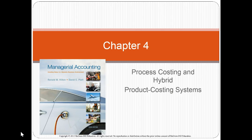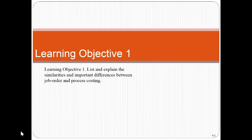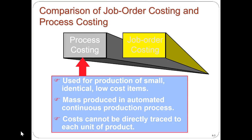Hello, this is Bob Steele. In this video we will take a look at chapter four, which covers process costing and hybrid product costing systems. Learning objective number one will be to list and explain the similarities and important differences between job order and process costing. We did job order in a prior lecture and now we're going to take a look at process costing.